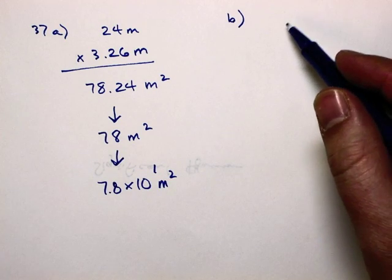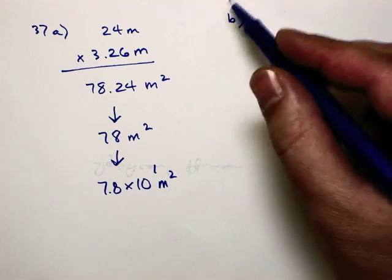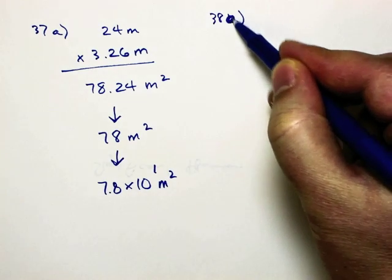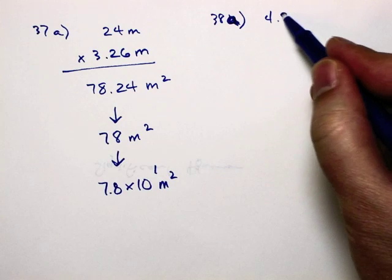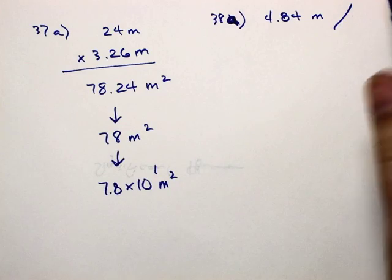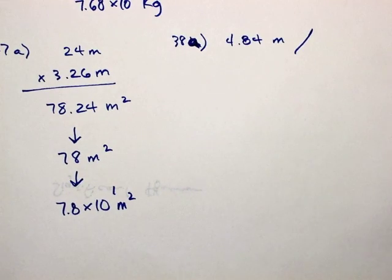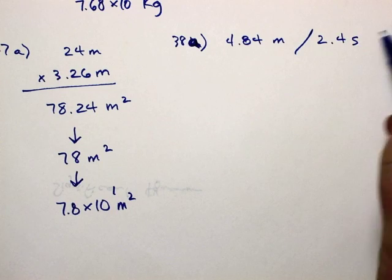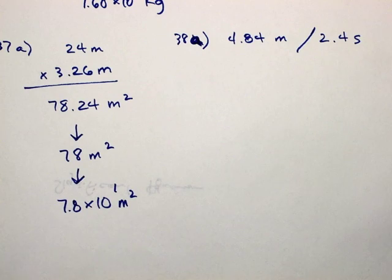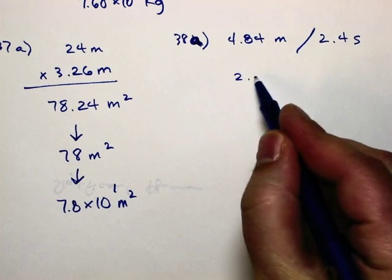Okay, let's do a division one. We'll see how that works out. Let's do 38A. 4.84 meters divided by 2.4 seconds. No big deal here. Just crank it through on a calculator. 4.84 divided by 2.4 to get an answer.